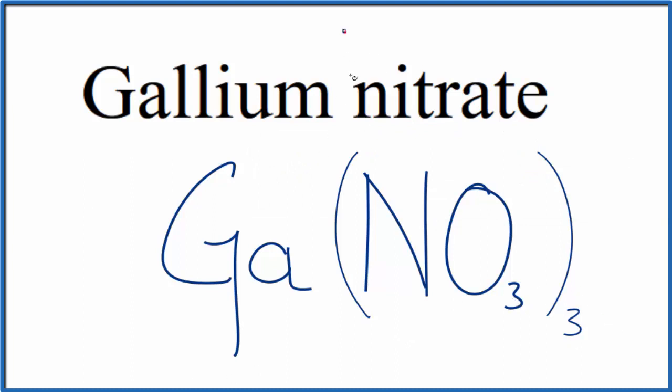Sometimes you will hear this called gallium trinitrate because of the 3 nitrogens here. This is used in medicine in cancer treatment to keep the bones from actually breaking down. So gallium nitrate is kind of an important pharmaceutical compound as well. So either way, the formula for gallium nitrate is Ga(NO3)3.